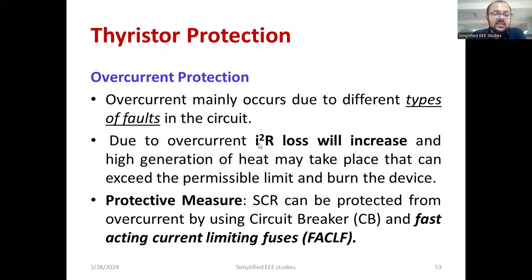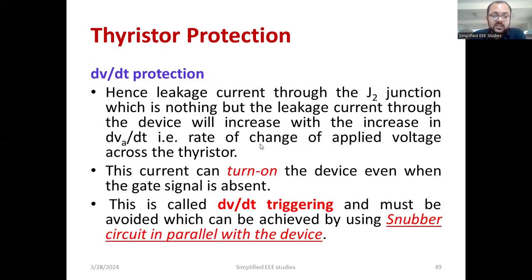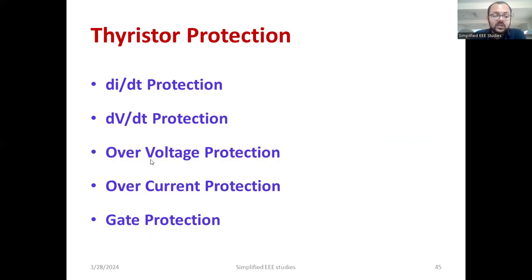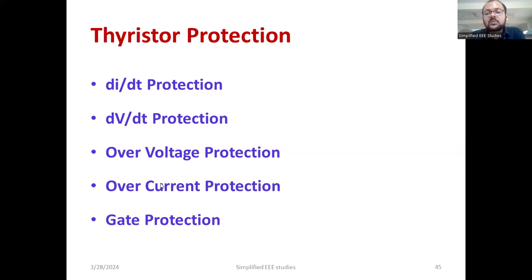If you have any queries related to the four types of protection — DI by DT protection, DV by DT protection, over-voltage protection, over-current protection, and gate protection — do let me know in the comment box. In this session, we had a better discussion about the various types of thyristor protection, which you can implement for SCR, diac, triac, or any type of thyristor family.